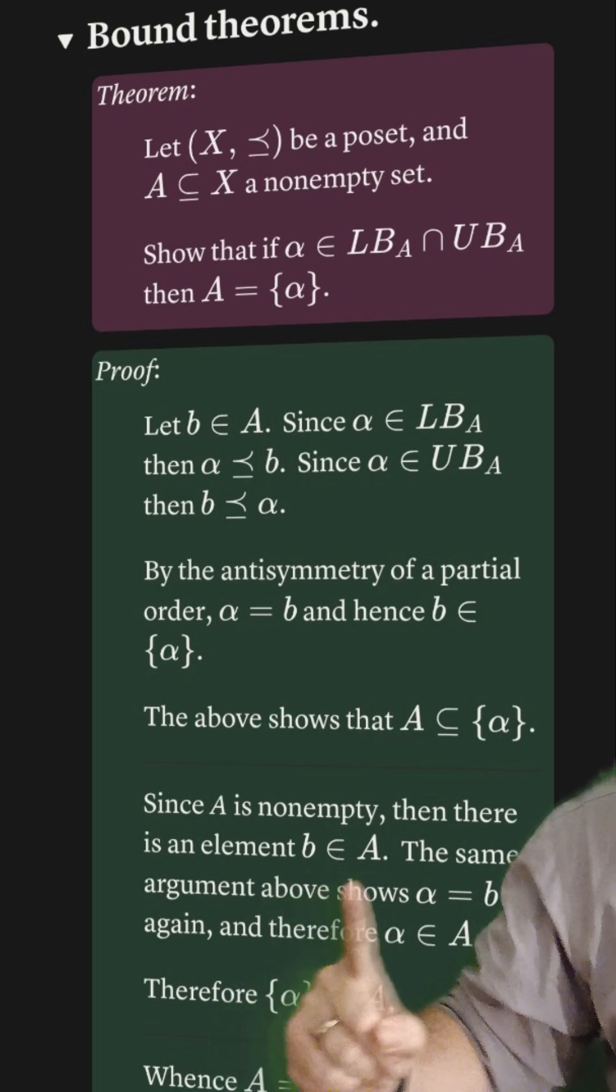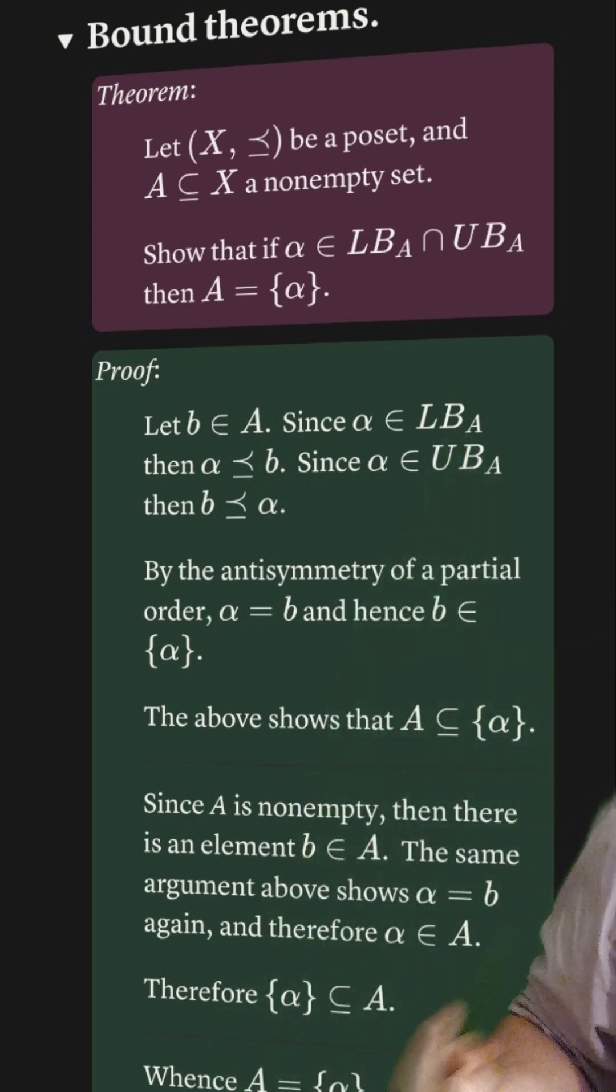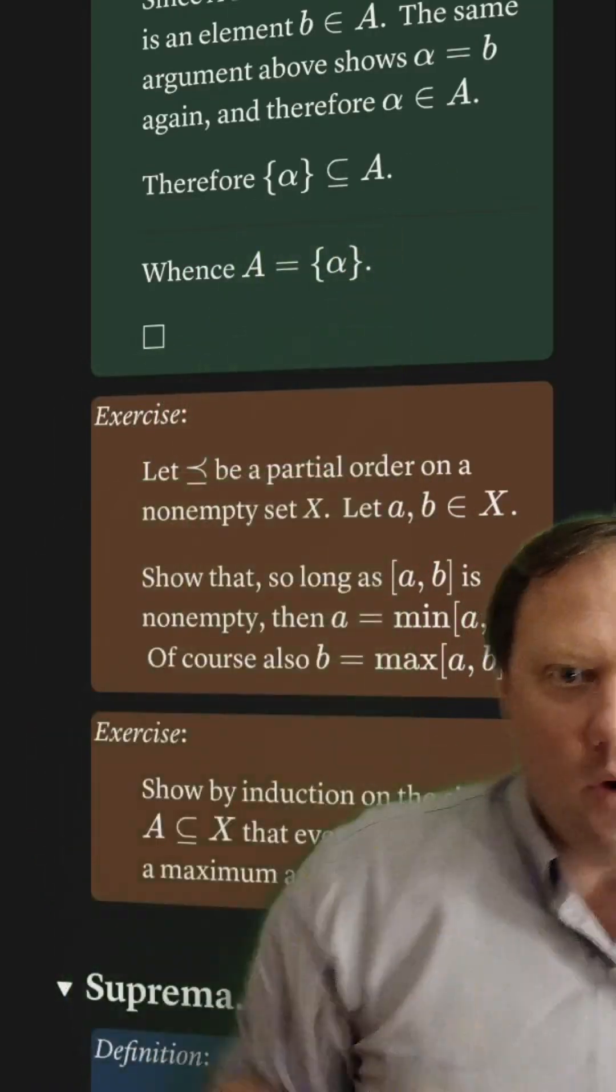Well, A was assumed to be non-empty, and so it has this element b. The same argument repeated shows that alpha is equal to b. Therefore, alpha is in A, and this finishes proving that direction of the containment. Equality follows.